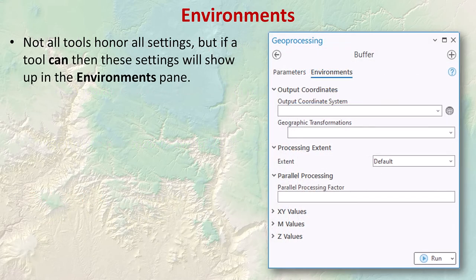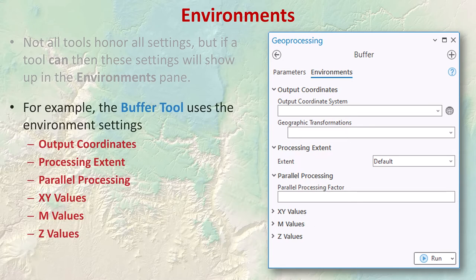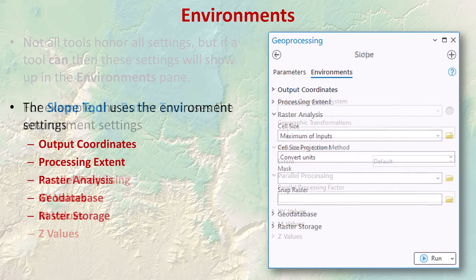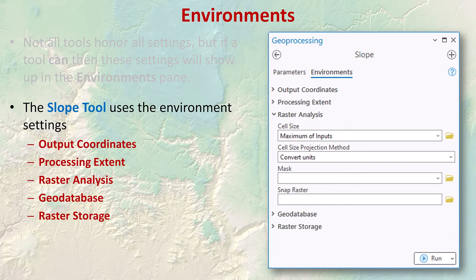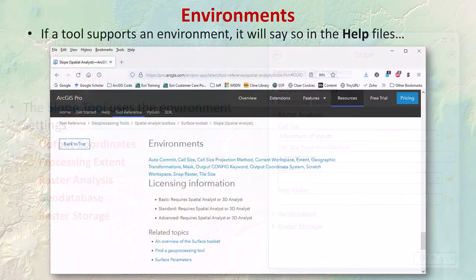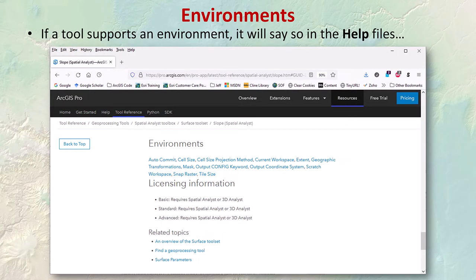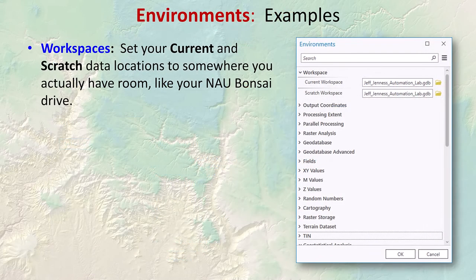Not all tools honor all environmental settings, but if a tool can honor a setting, those settings will show up in that tool's environments pane. For example, the buffer tool uses six environmental settings while the slope tool uses five. Each tool shares the output coordinates and processing extent settings. If a tool does support an environmental setting, it'll usually say so at the bottom of the help for that tool.